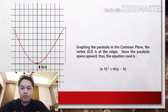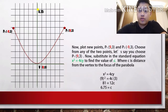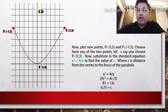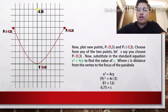Since the parabola opens upwards, the equation used is (x − h)² = 4c(y − k). Now plot new points: P₁ is (9, 3) and P₂ is (−9, 3). Choose from any of the two points — let's say P₁: (9, 3). Substitute into the standard equation x² = 4cy to find the value of c, where c is the distance from the vertex to the focus of the parabola. Substituting x = 9: 9² = 81, and 4cy becomes 12c.